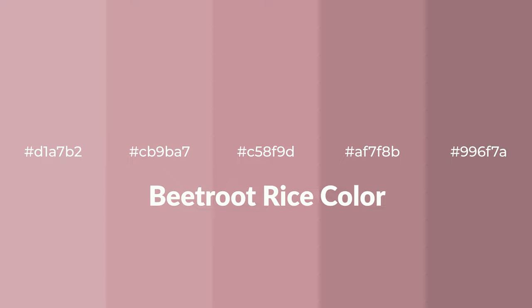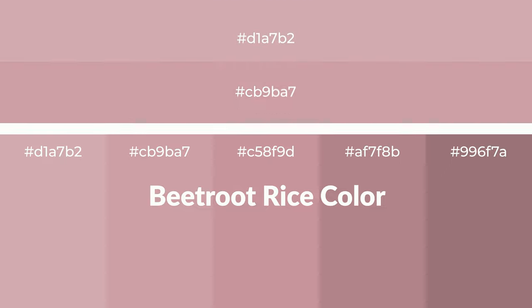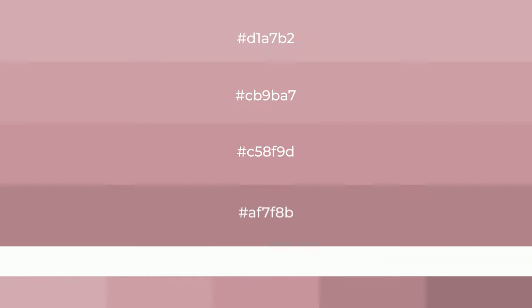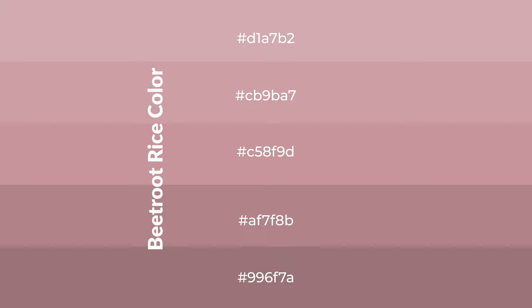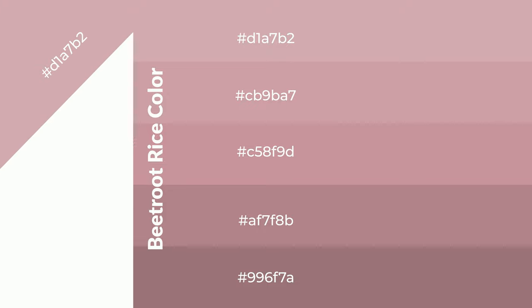Warm shades of beetroot rice color with red hue for your next project. To generate tints of a color we add white to the color — tints create light and exquisite emotions. To generate shades of a color we add black to the color, and it is used in patterns, 3D effects, and layers. Shades create depth and drama.